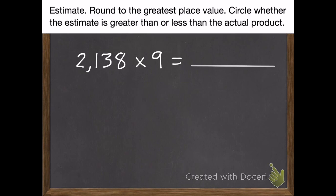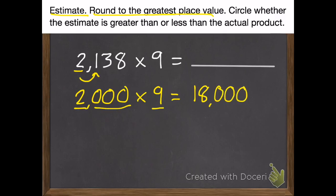Second example, same instructions. So I'm going to estimate to the greatest place value, which this time is the thousandth place. I look at the digit to its right, and I'm going to keep this a 2,000. We can use the zero trick. 2 times 9 equals 18, plus 3 zeros. So I get 18,000.